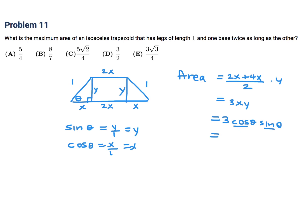We've got two trig components — I'd rather have just one. If I write this as one half times 2 cos(θ) sin(θ), I can use the trig identity that 2 sin(θ) cos(θ) equals sin(2θ). So the area simplifies to three-halves times sin(2θ).